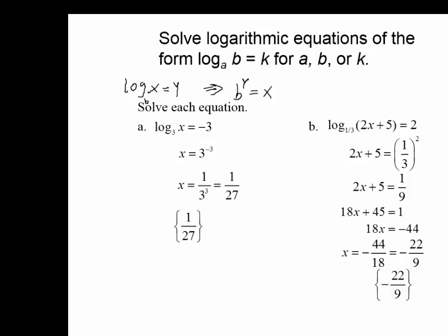So that's exactly what we're doing here. We take the base 3, raise it to the power of minus 3, and that should be equal to x. So x equals 3 to the power of minus 3, which is the same as 1 over 3 to the power of 3, which is equal to 1 over 27.